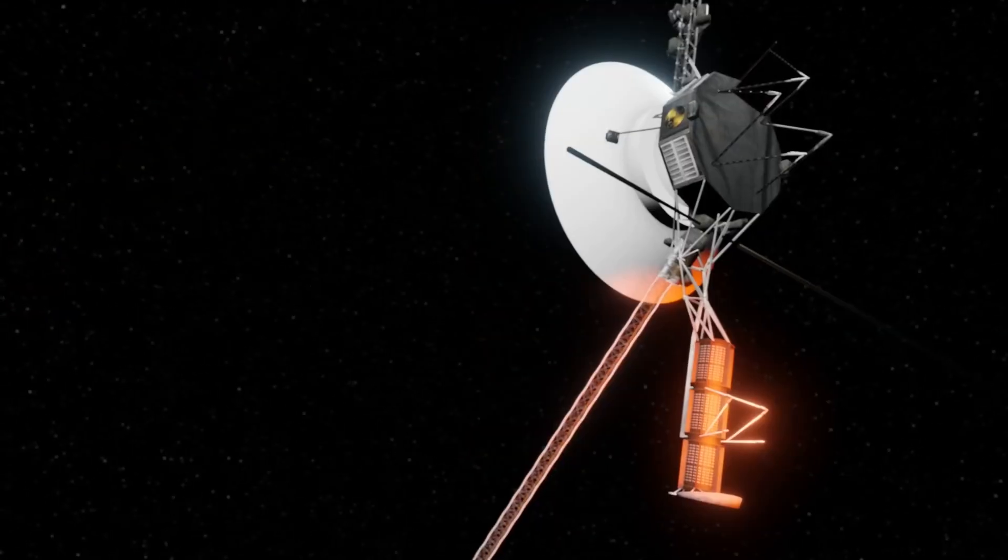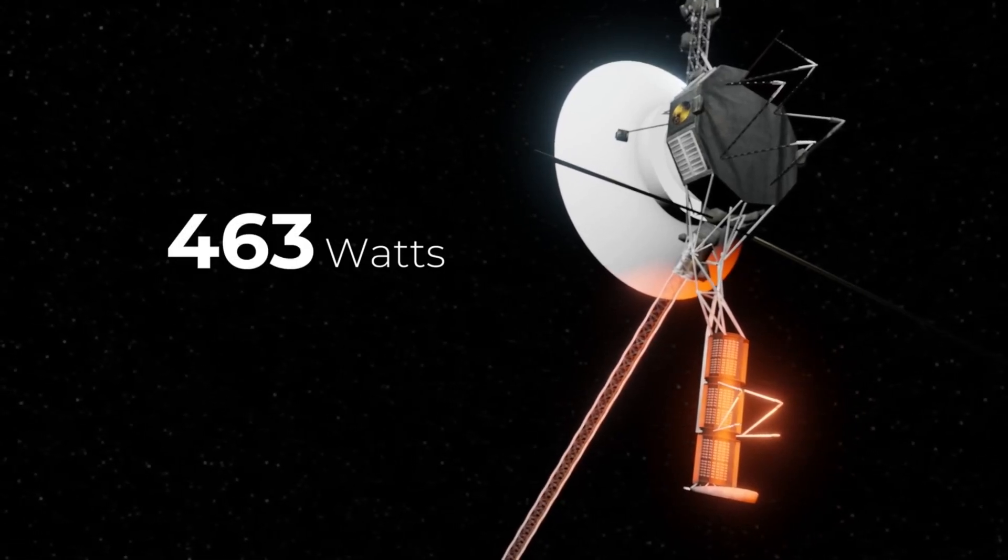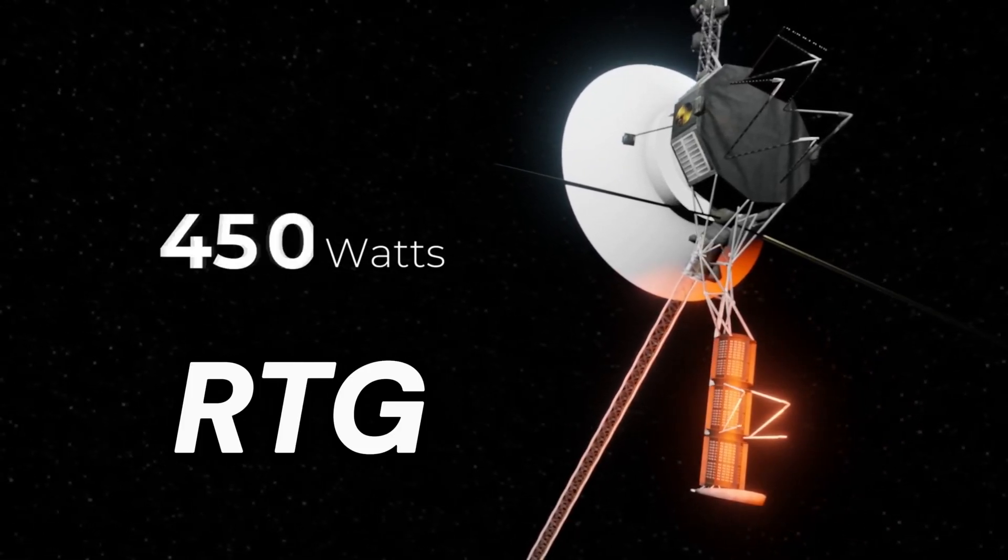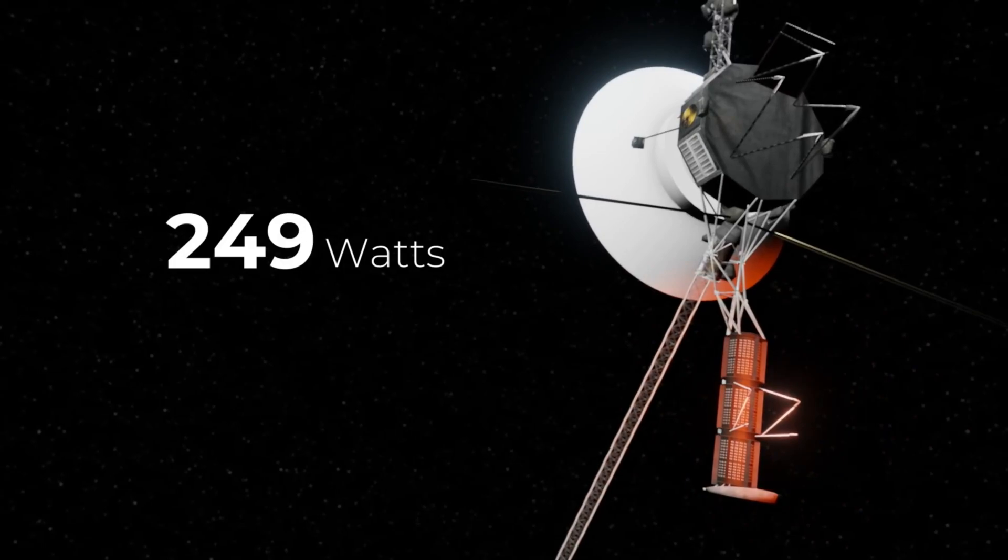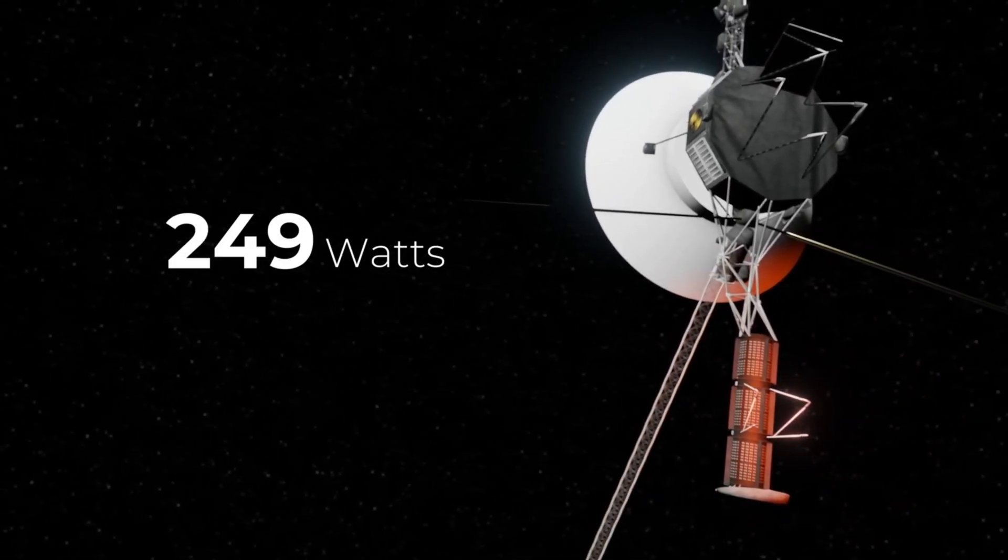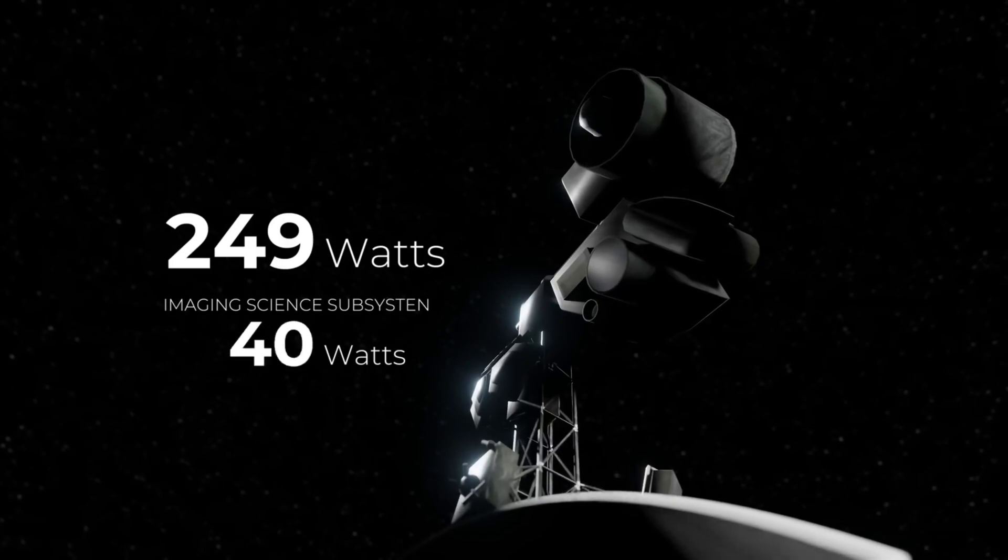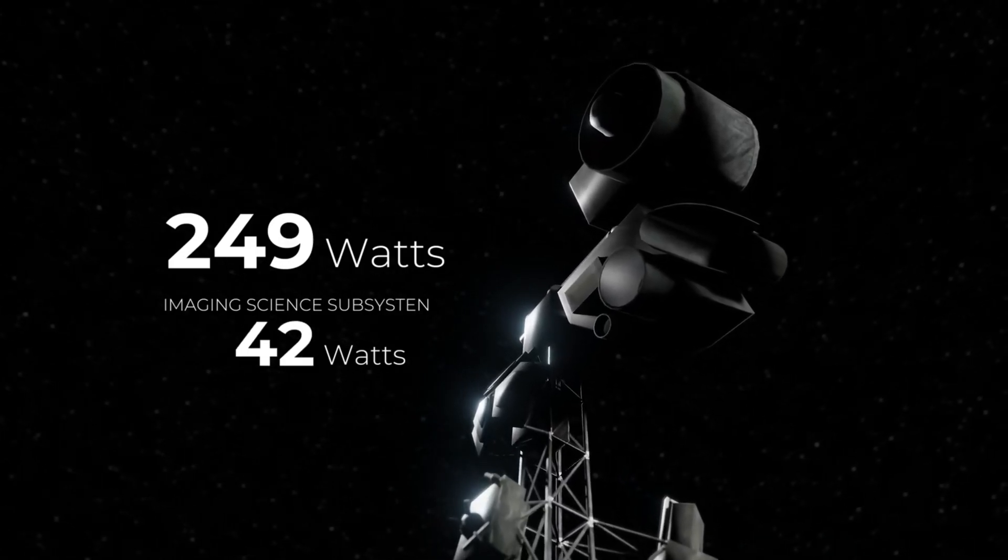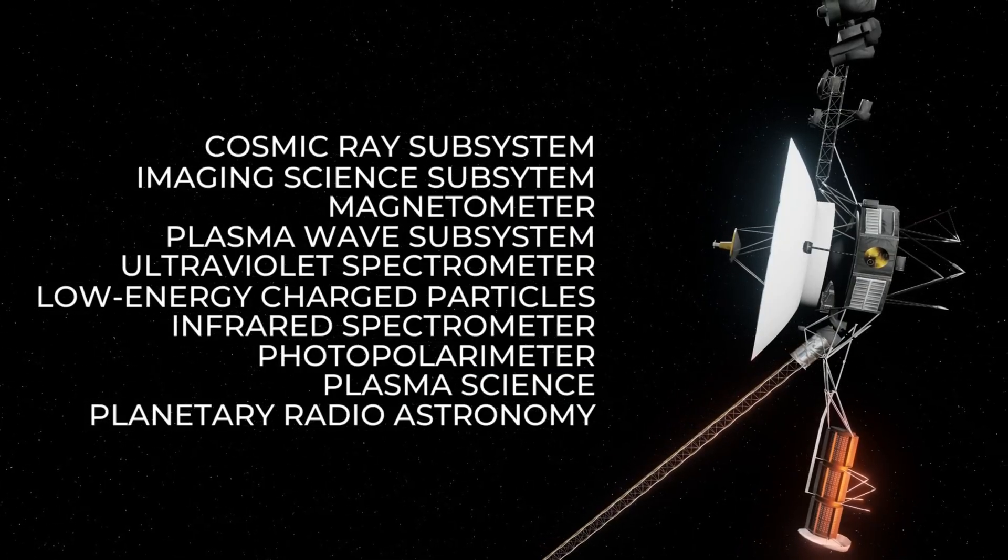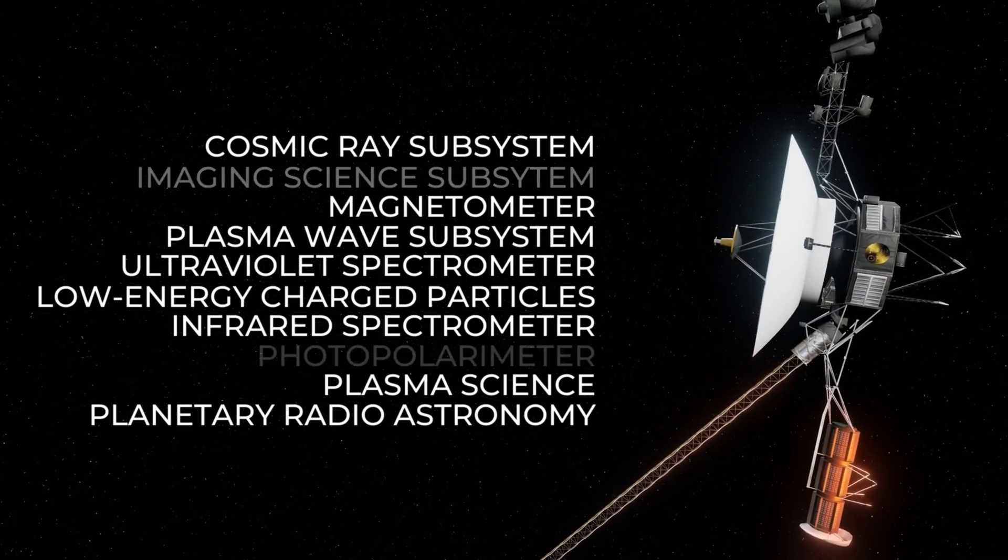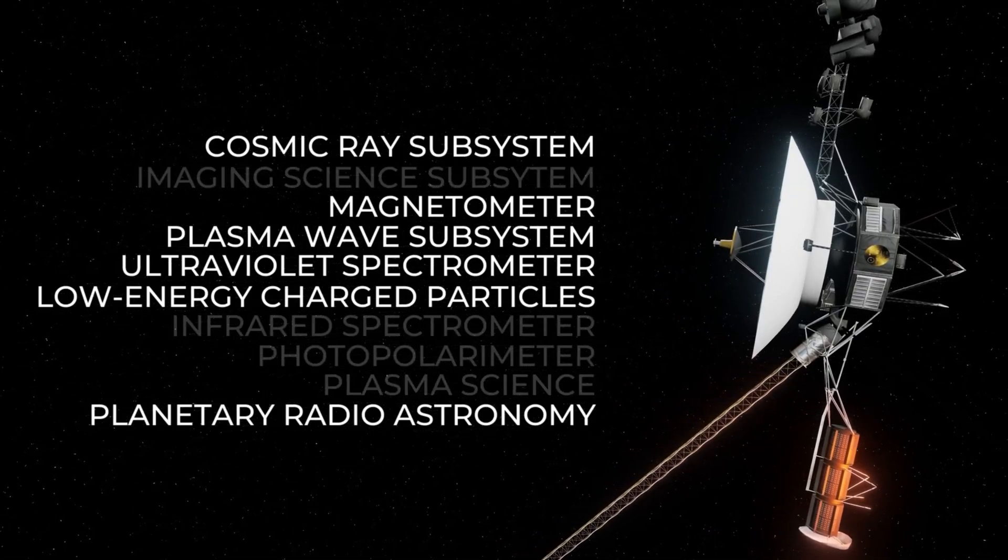Like many spacecraft, Voyager 1 is powered by an RTG, which takes the heat from a radioactive material and turns it into electricity. Every year the power output decays by about 4 watts, and now Voyager 1 is only producing 57 percent of its initial power output.